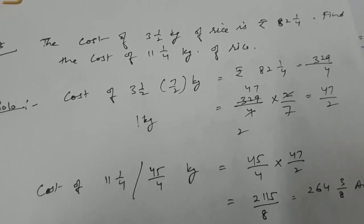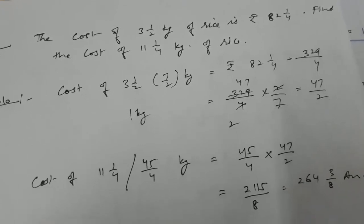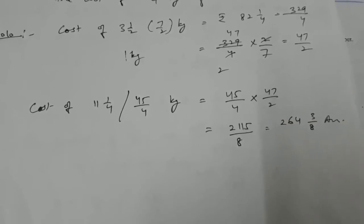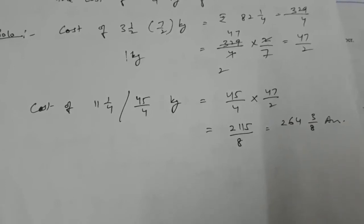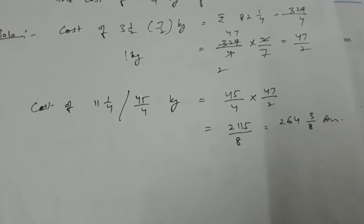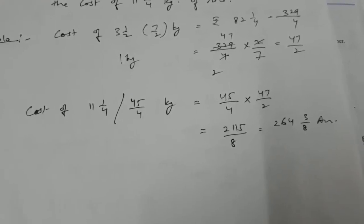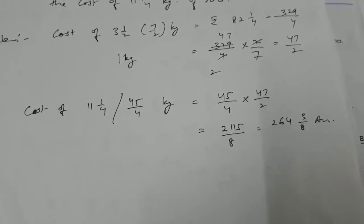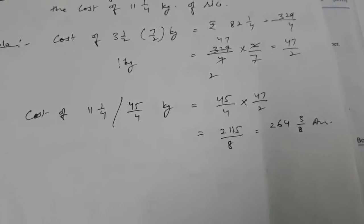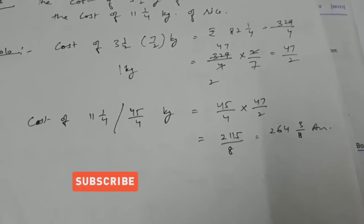First we find the cost of 1 kilogram, that is 329 by 4 into 2 by 7, which gives 47 by 2. Then we calculate the cost of 11 whole number 1 by 4 kilogram, that is 45 by 4 kilogram of rice. Multiply 47 by 2 with 45 by 4, that is 2115 by 8. The cost of 45 by 4 kilogram of rice is 264 whole number 3 by 8 rupees.